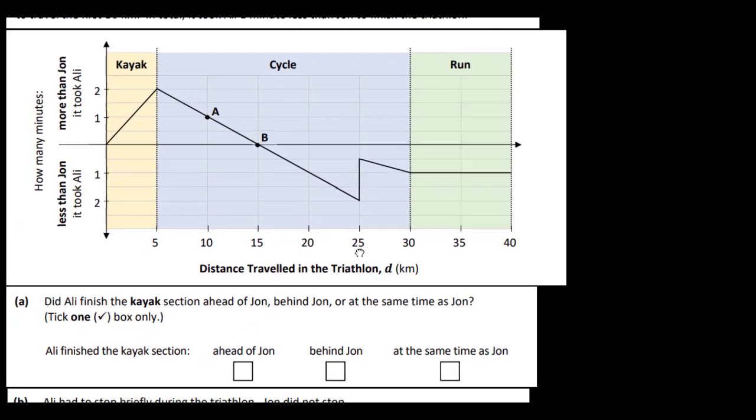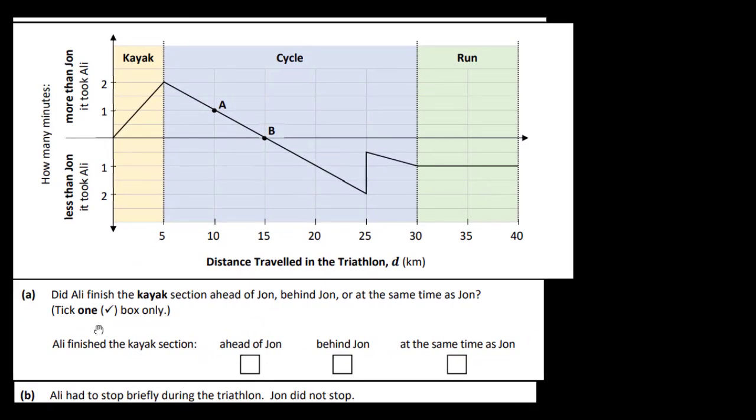OK, so let's have a look at the questions then. Did Ali finish the kayak section ahead of John, behind John, or at the same time as John? Tick one of the boxes below. So this is the kayak section here, and this is Ali's race here if you like. So Ali took 2 minutes longer than John, it took Ali 2 minutes longer than John at this point of the race, after 5km. So he is behind John at this stage, Ali is behind John at this stage by 2 minutes.